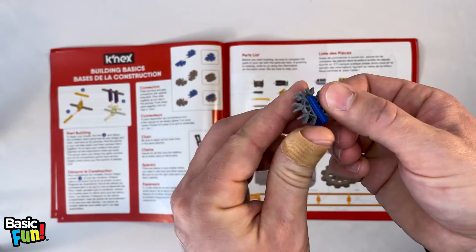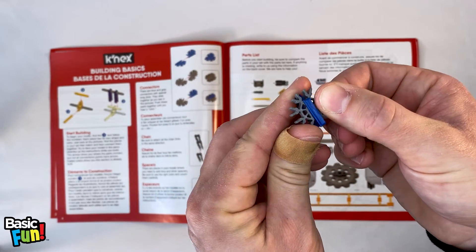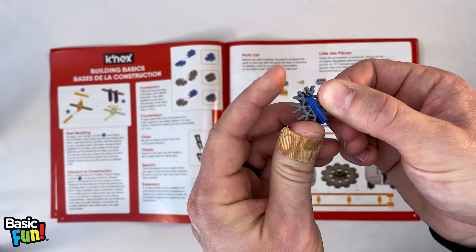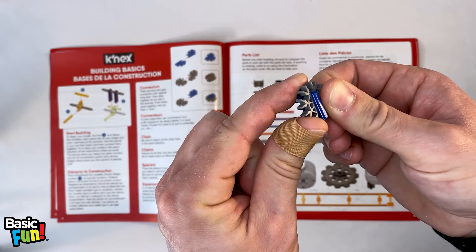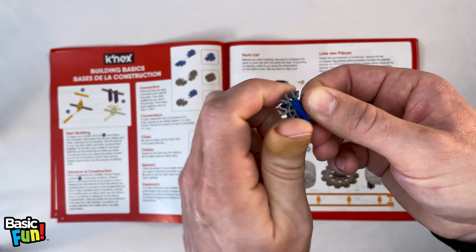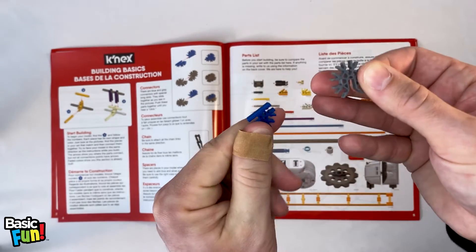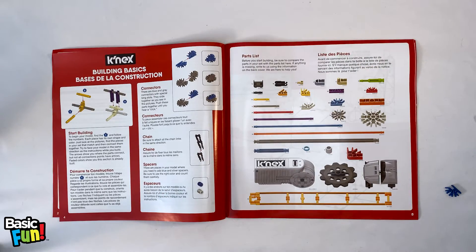To separate them, take your thumb on the edge of the seven-slot connector and then use your index finger on the blue connector and just press them apart. Now, if you're limited in your hand strength or your dexterity, there's an easy tool you can create to help you out with this.